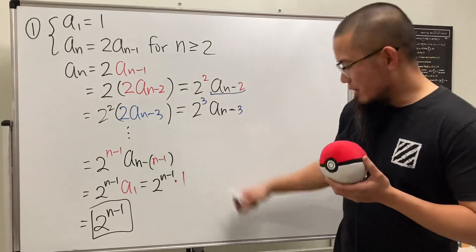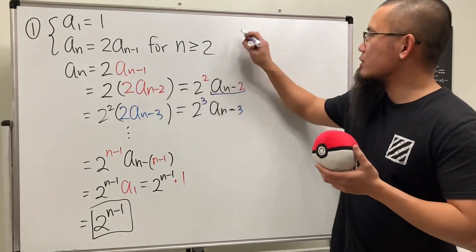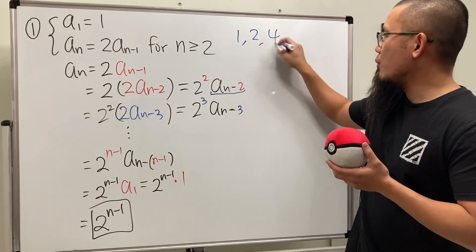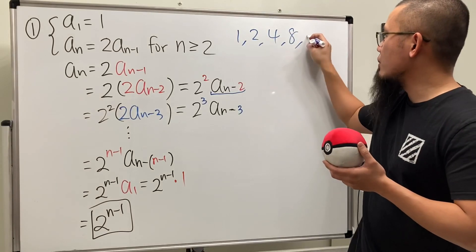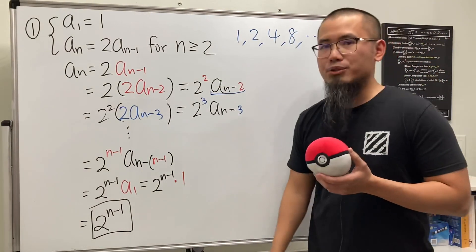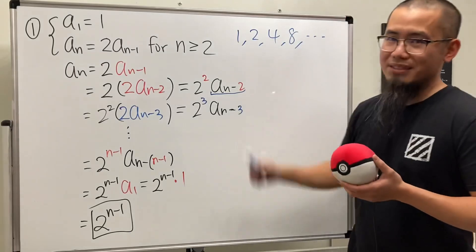If you work that out, the first term is 1, the next is 2, then 4, then 8, and so on. It's just a geometric sequence. That's the formula for this example.